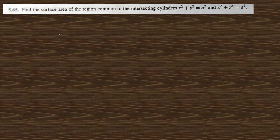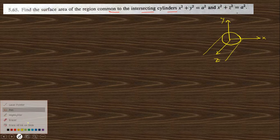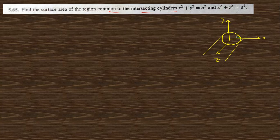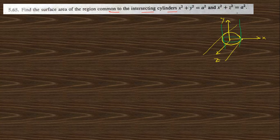Let's start with problem 5.65, which says: find the surface area of the region common to the intersecting cylinders of these two. If we draw the cylinders — this is the x-axis, y-axis, and z-axis — the first equation x² + y² = a² is a circle and its cylinder extends along z. The next one x² + z² = a² lies in the xz-plane and extends along the y-axis, so they intersect like that.